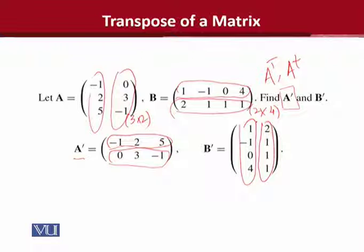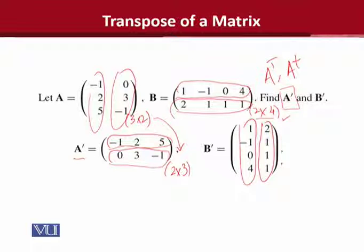One important thing to note here is the order. Before, the order was 3 into 2; after the transpose, the rows are 2 and the columns are 3 — so the order is reversed. Similarly, if the order was 2 into 4, after transpose the rows are 4 and the columns are 2. So this is also reversed. This reversal of order is the outcome of a transpose.